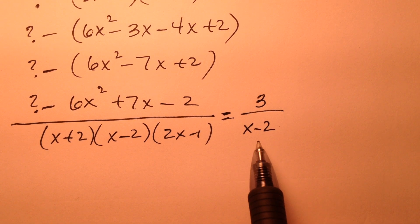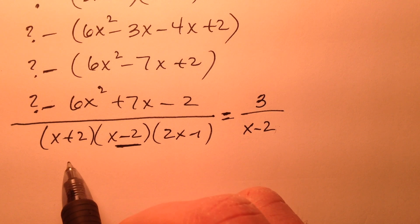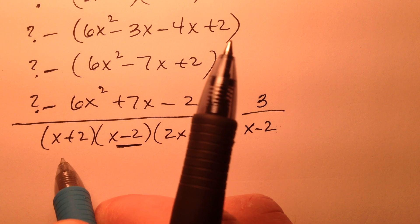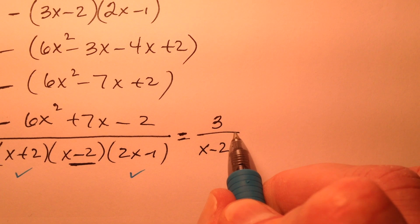Well, in order to have just x minus 2 in the denominator, which is this guy, we know that the x plus 2 and the 2x minus 1 must have canceled out. So I'm going to extend my fraction bar.